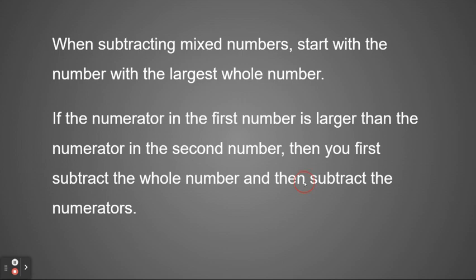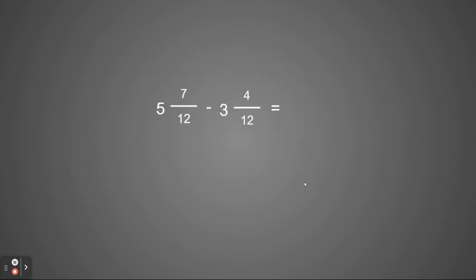Let's see some examples. If I have five and seven twelfths minus three and four twelfths, I start by subtracting the whole numbers: five minus three is two. Then I subtract the numerators: seven minus four is three. So I'd have two and three twelfths.